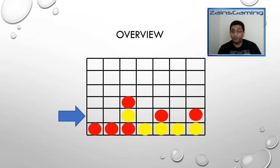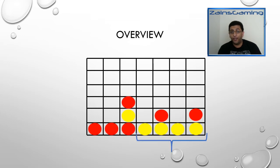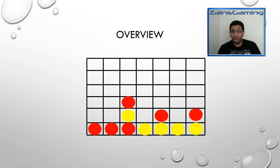The first player to reach four tokens in a row wins — for example, these are four yellows horizontally. And you're trying to block the other player from connecting 4 while you're trying to connect 4 yourselves.